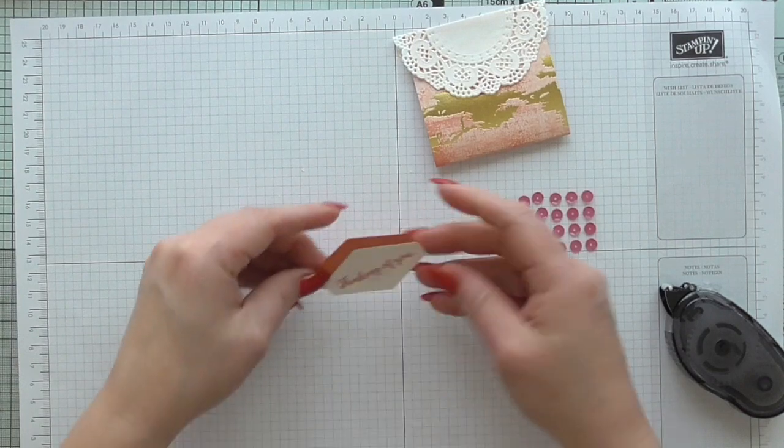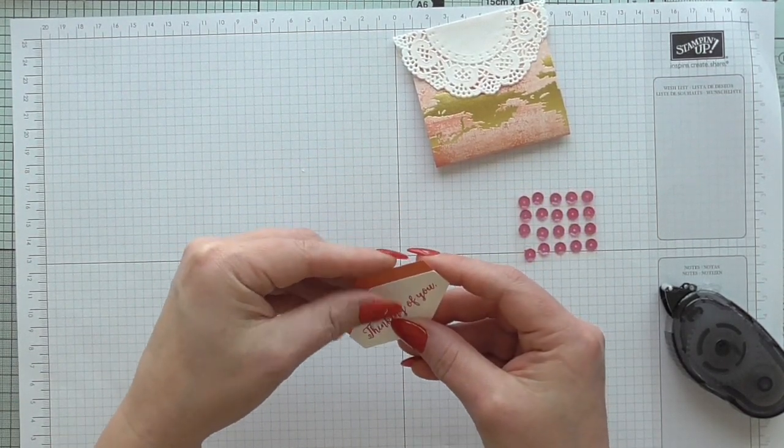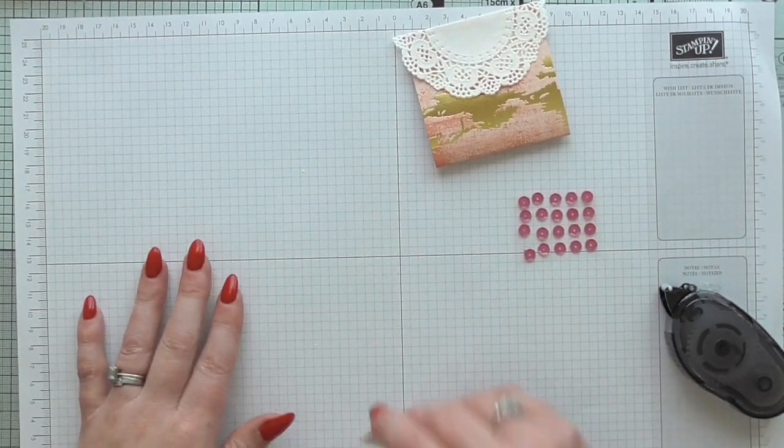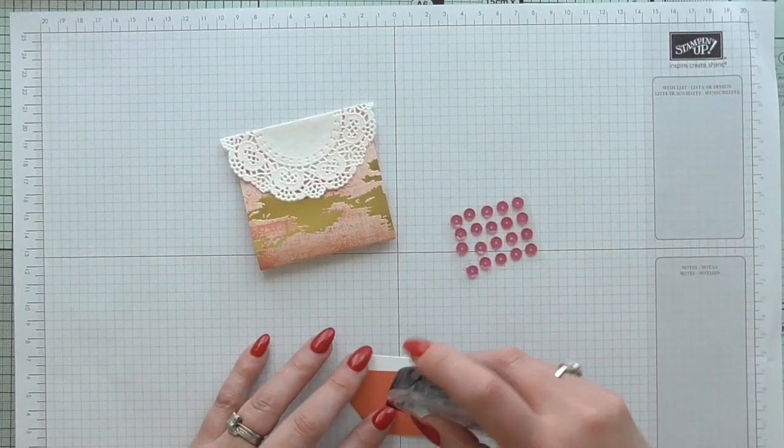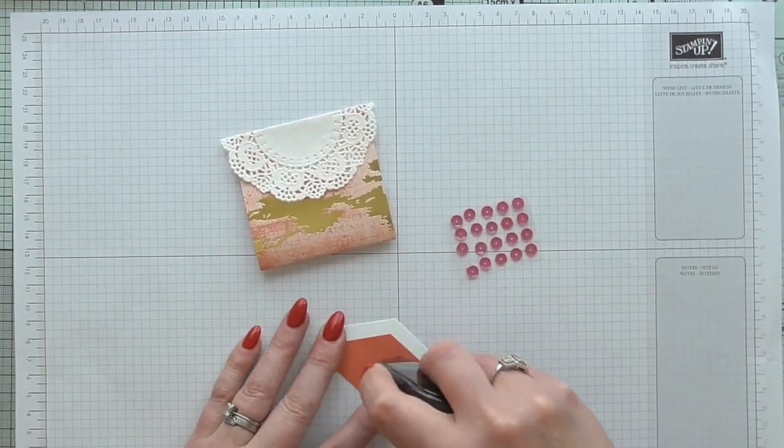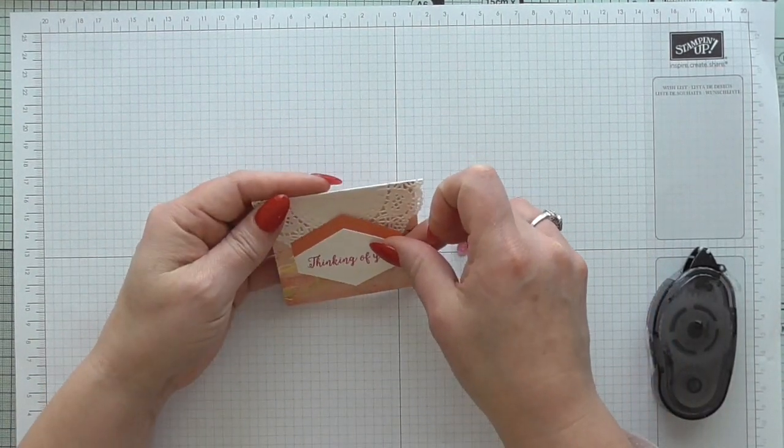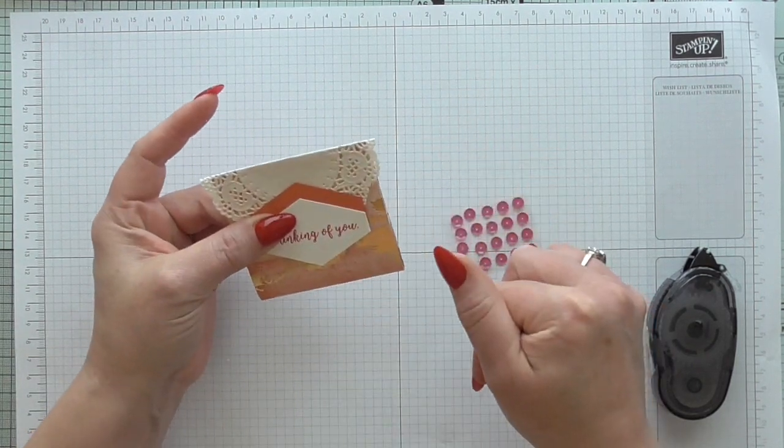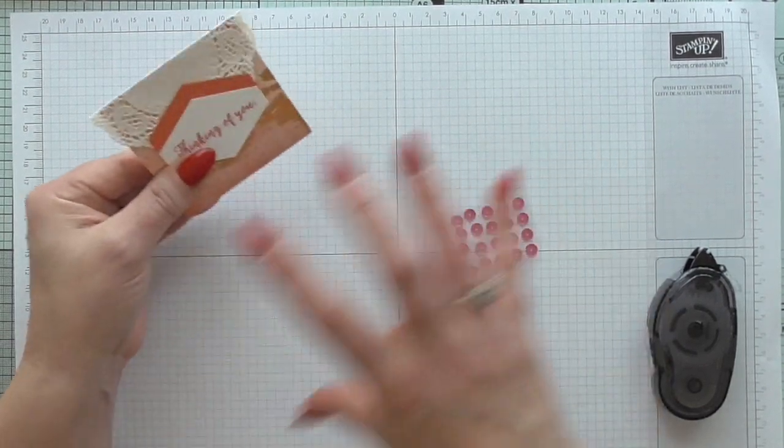I've not put that on terribly straight, let me try and straighten it. There we go, that's better. And then we can adhere that to our treat pouch, again just using snail. And what I do is, much like anybody else that makes anything in bulk, I'll cut all my pieces first, then I'll do all my stamping, all my punching, and I'll have it in like a little production line.